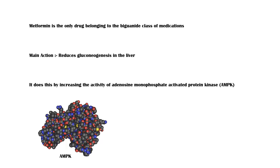Metformin is the only drug belonging to the biguanide class of medications. Its main action is to reduce blood glucose levels by inhibiting new glucose formation in the liver, which is also called gluconeogenesis. It does this by increasing the activity of an enzyme called adenosine monophosphate-activated protein kinase, or AMPK for short.